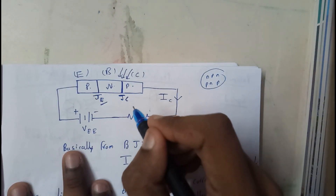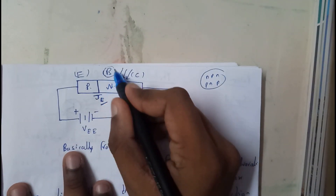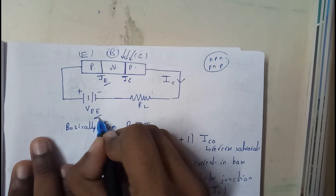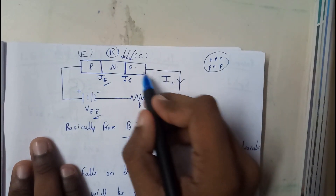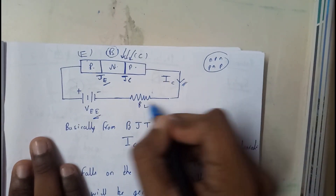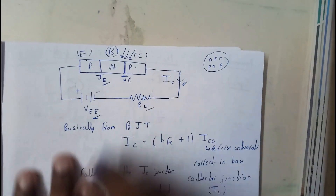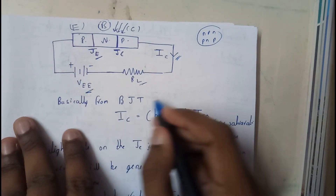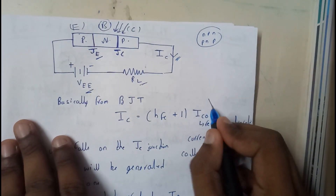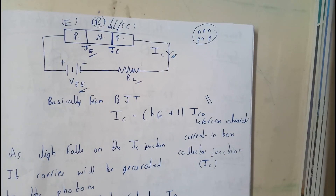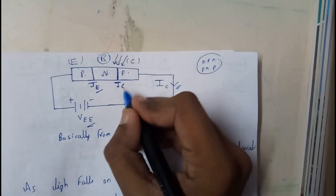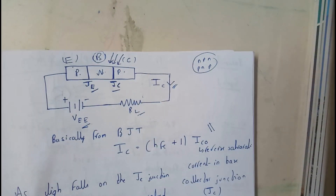We give light intensity at the base. We also provide a power supply to the emitter and get output current IC from the collector. There is a load assumed in the circuit. From BJT theory, there is an equation found in the common-base configuration involving reverse saturation current. As light falls on the JC junction, that is our main junction.